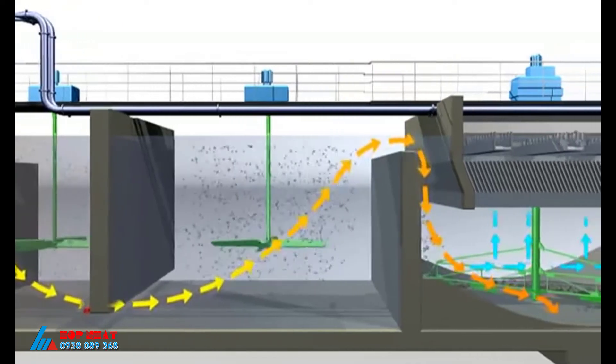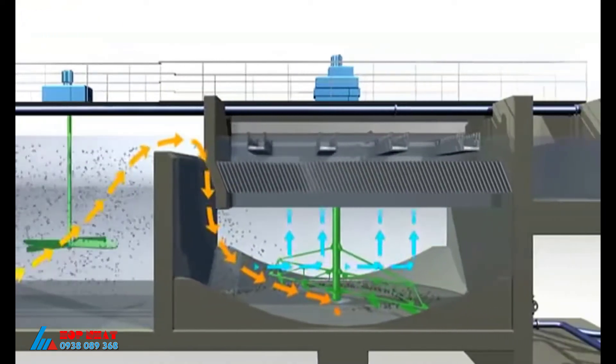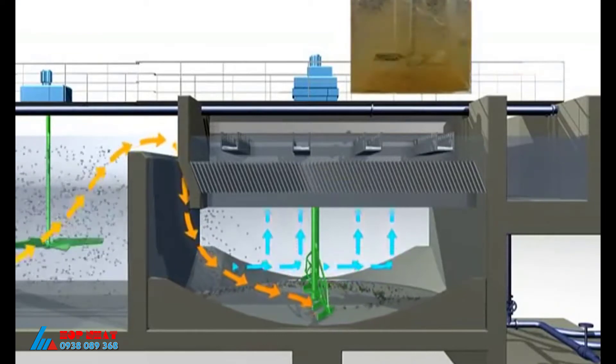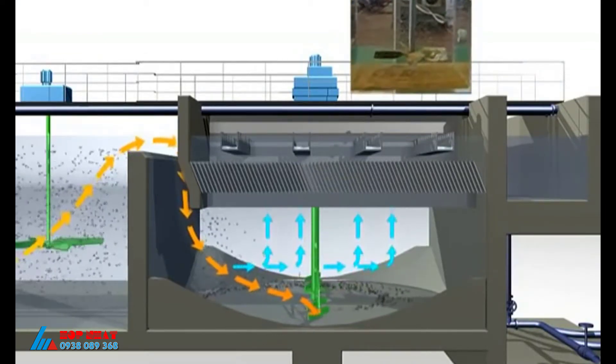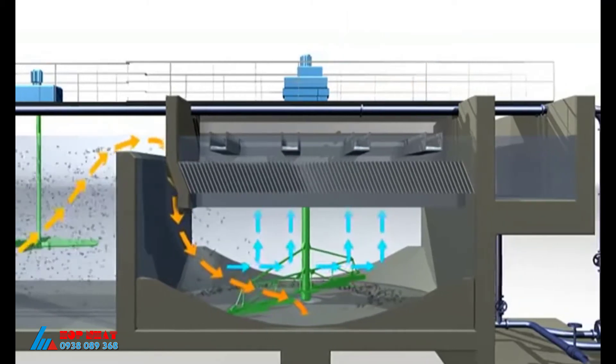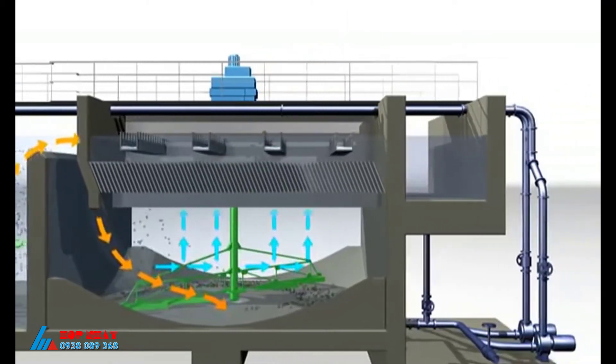The fully flocculated water then enters the clarifier where the micro sand ballasted flocks quickly settle to the bottom while the clarified water rises through the lamella settling zone. High quality clarified water leaves ACTIFLOW through a series of collection troughs.